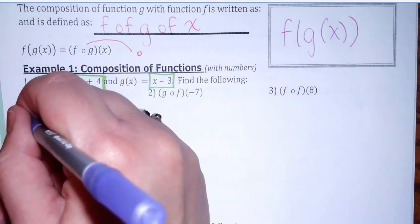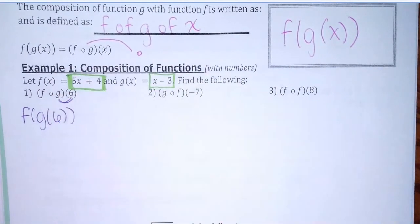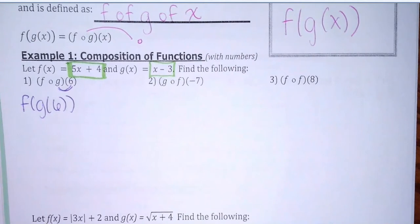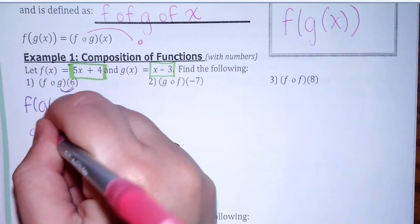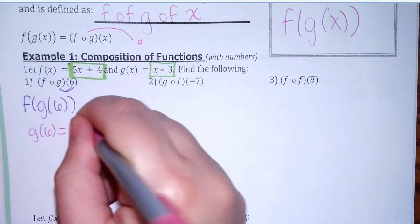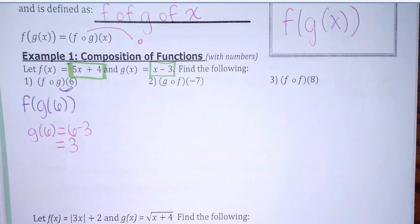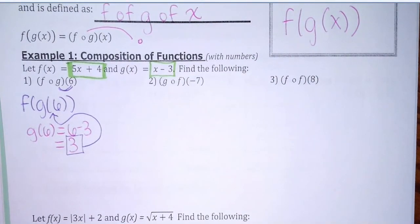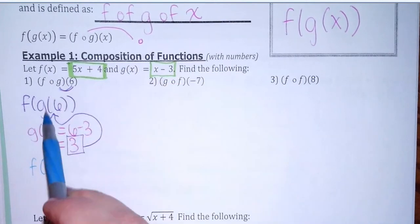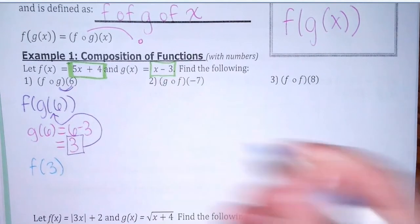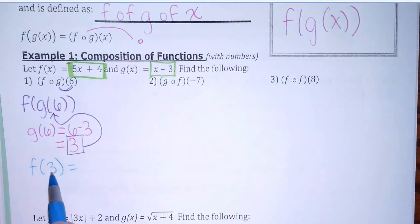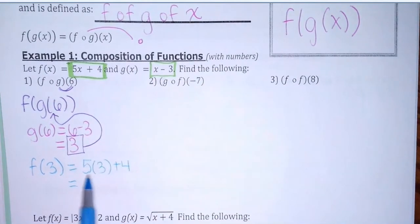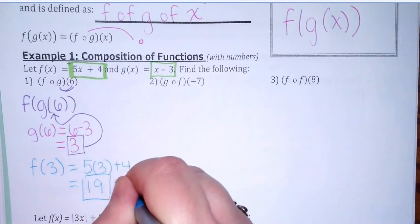Let me write it with the other notation: this would be f of g of 6. Each one of these turns into two problems in one. First, I would find g of 6. Pick the correct function — that would be 6 minus 3, which is 3. Then you take g of 6 and substitute that in. So to get the final answer, if g of 6 equals 3, then I do f of 3. That's just notation saying I plug 3 into the f of x function everywhere I see an x. So 5 times 3 plus 4 gives a final answer of 19.